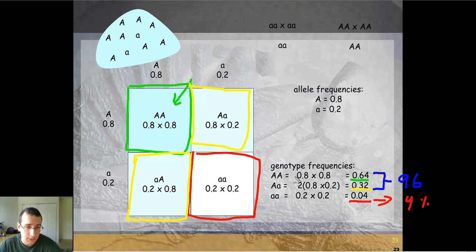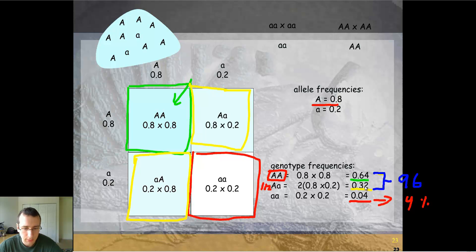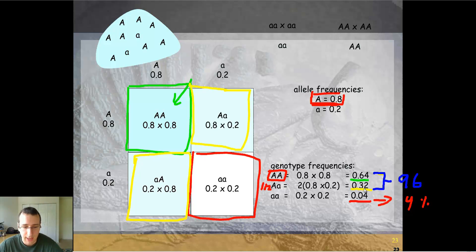You can also calculate the allele frequencies of the offspring. Using the shortcut — the homozygous dominant frequency of 0.64 plus half of the heterozygous 0.32, which is 0.16 — gives you 0.8, the same as the parents. And for the recessive allele, half of 0.32 is 0.16 plus 0.04 gives you 0.2 — again, the same as the parents.